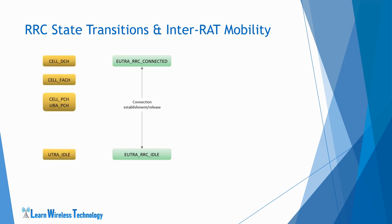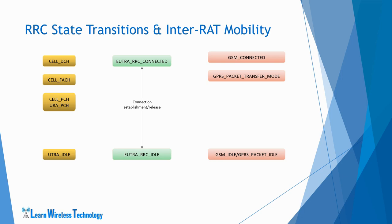These are the RRC states in WCDMA or UTRA: Cell DCH, Cell FACH, Cell PCH or URA PCH, and UTRA idle state. And the states in GSM are: GSM connected or GPRS packet transfer mode, and GSM idle or GPRS packet idle. In these two RATs as well, the UE performs connection establishment and release procedure to transit between idle state and connected state.